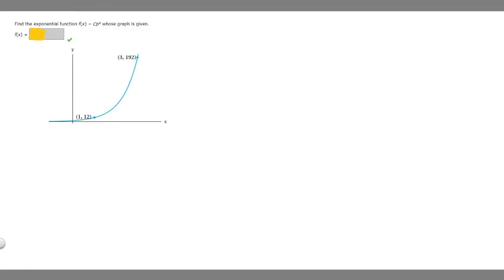In this problem we're asked to find the exponential function f(x), which is equal to c times b raised to the x, for which a graph is given. We're given this graph here with the points (1,12) and (3,192).